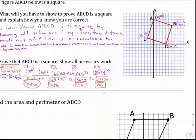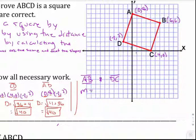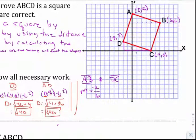Let's check the slope formula. Checking the slope of AB and DC at the same time — slopes are rise over run. AB goes down 2 over 6, so the slope of AB is negative 2 over 6. DC also goes down 2 and then over 6, so that slope is also negative 2 over 6. Those are parallel, which we expected.